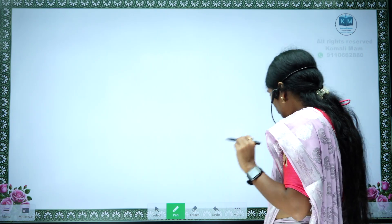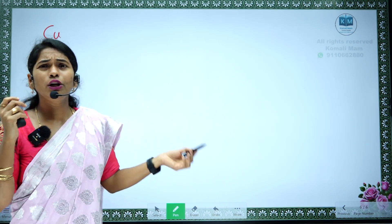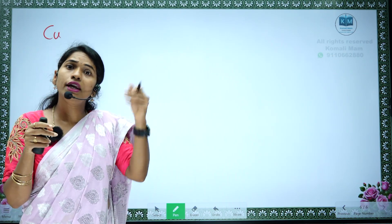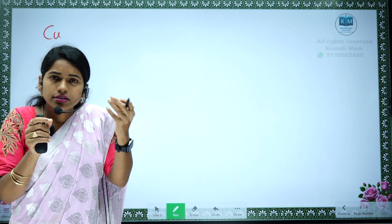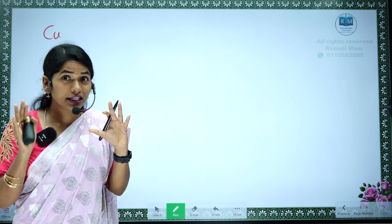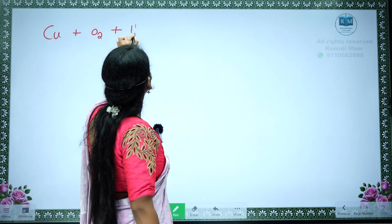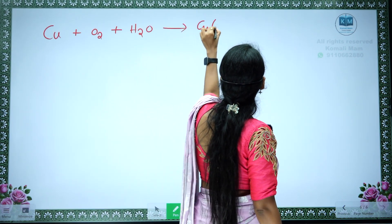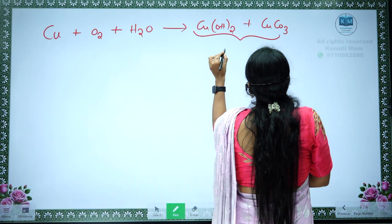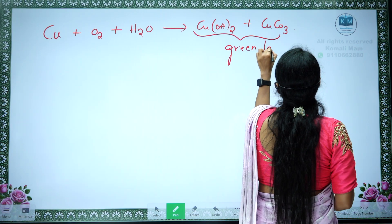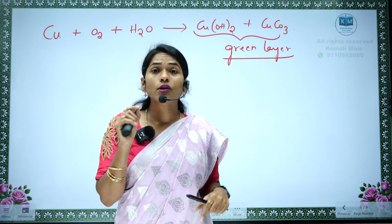Not only iron objects — copper also. If you keep a copper object for a long time, like a copper pot with water left for three to five days depending on the copper quality, after a few days a green color layer forms. Why? Because copper reacts with the oxygen present in the air and moisture, and converts into copper hydroxide and copper carbonate. Copper carbonate is a green colored substance, and this combination of copper hydroxide and copper carbonate forms the green layer which we observe.